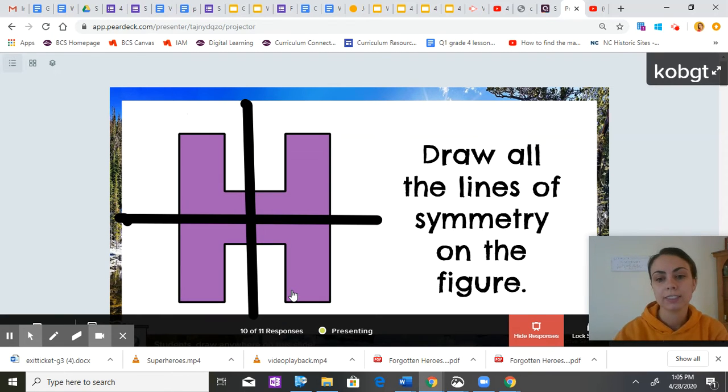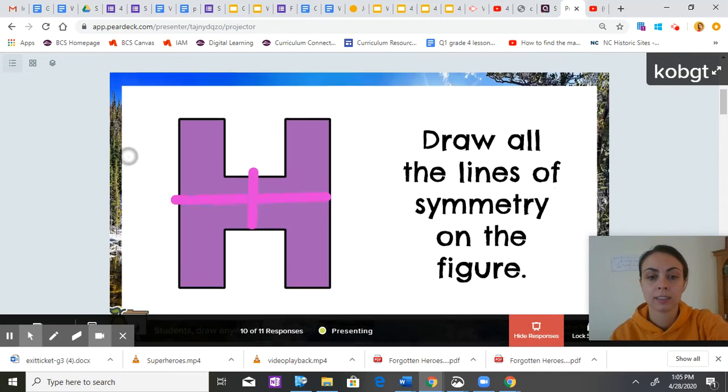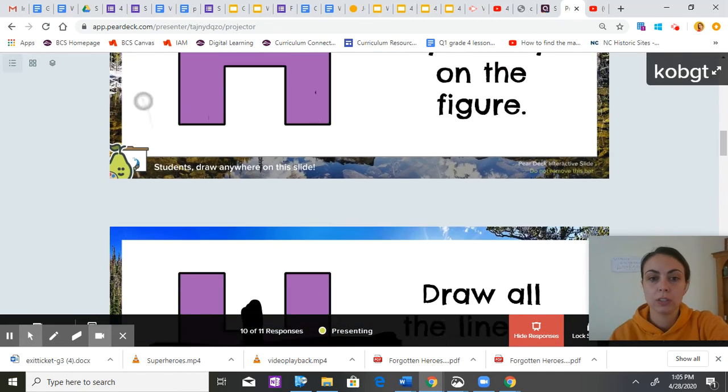Draw all the lines of symmetry on the figure. So this is the lines of symmetry they chose. Do you agree or disagree? Do you think there's more or less? This is what the classmates chose.